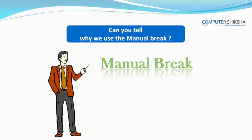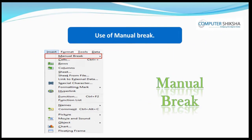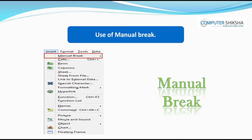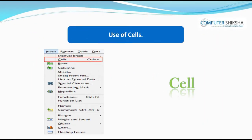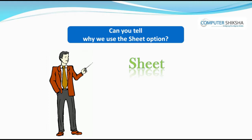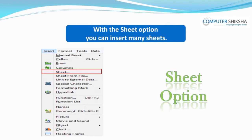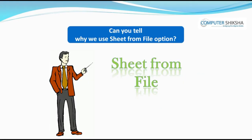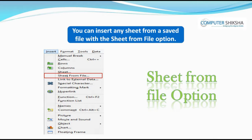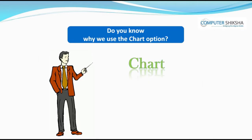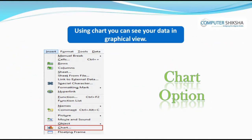Can you tell why we use Manual Break? With Manual Break, you can break your sheet into rows and columns as per your requirement. With the Cells option, you can insert cells into the spreadsheet, meaning that you can bring up new cells. With the Sheet option, you can insert many sheets. With Sheet from File, you can insert any sheet from a saved file. Using the Chart option, you can view the data of your sheet in a graphical form.